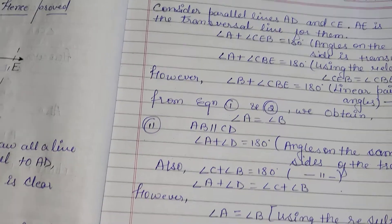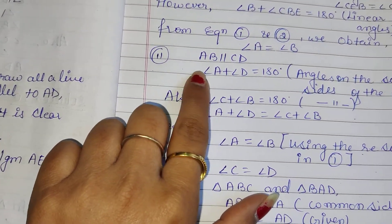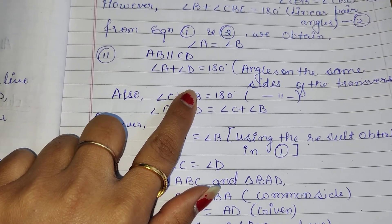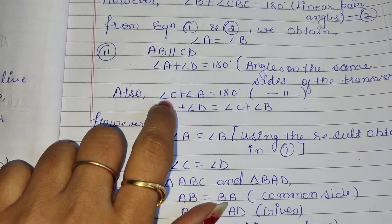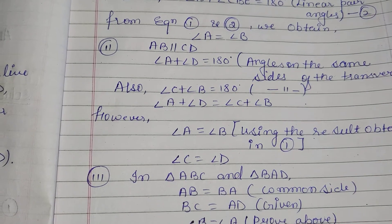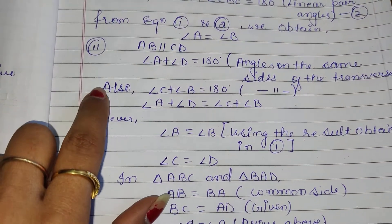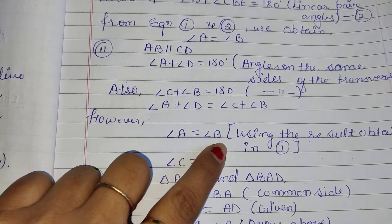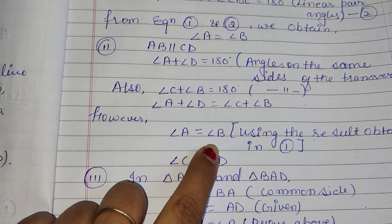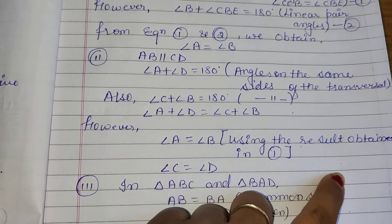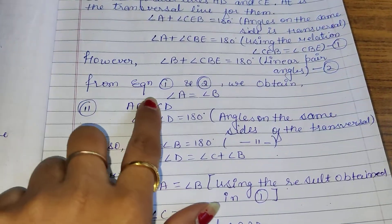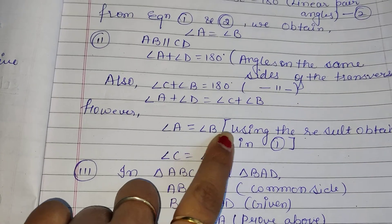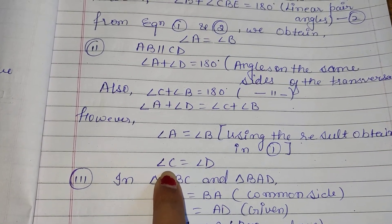From equations 1 and 2, angle A is equal to angle B. In the second part, since AB is parallel to CD, we can write angle A plus angle D equals 180 degrees, and angle C plus angle B equals 180 degrees — angles on the same side of the transversal. From these equations, angle A plus angle D is equal to angle C plus angle B. Since angle B equals angle A, we obtain angle C equals angle D.